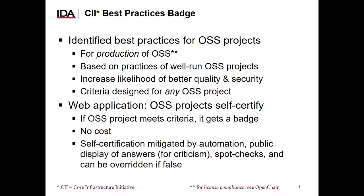We chose self-certification because there are literally millions of open source software projects, and self-certification can scale to such sizes. Self-certification systems can have problems, so we counter those problems in a variety of ways. Perhaps the most important is that we automate the process. In a number of cases, we automatically determine if a project meets a criterion. We also require that the answers be public, so the public can judge the accuracy of the answers. We do spot checks, and the answers can even be overridden if a project falsifies their answers. As a result, we believe we've developed an approach that scales yet provides good confidence in those answers.